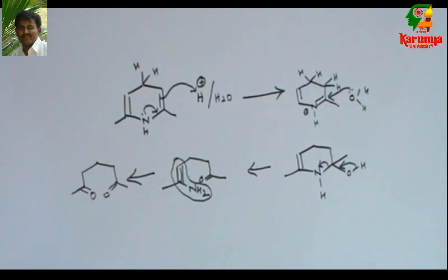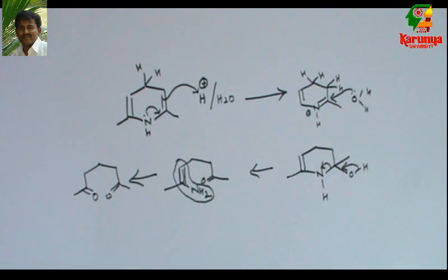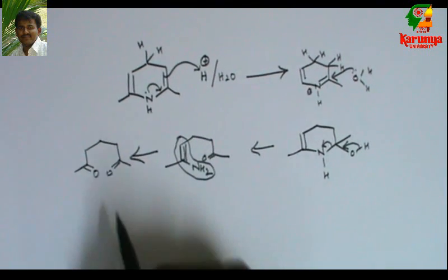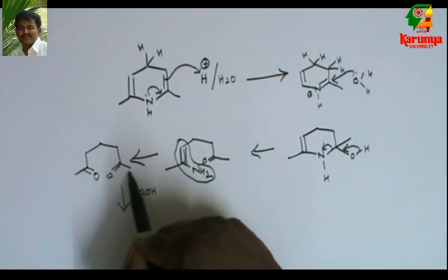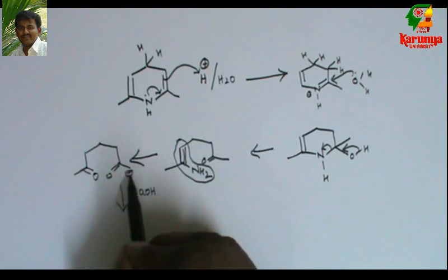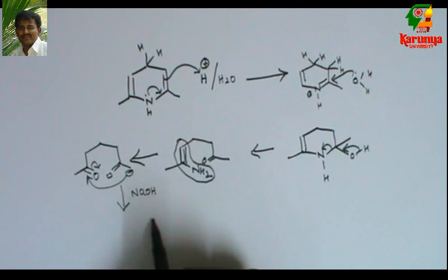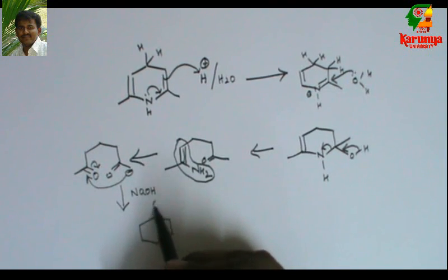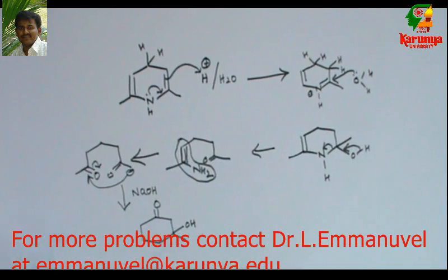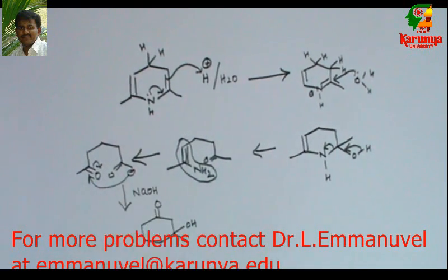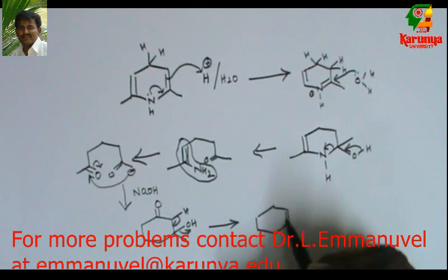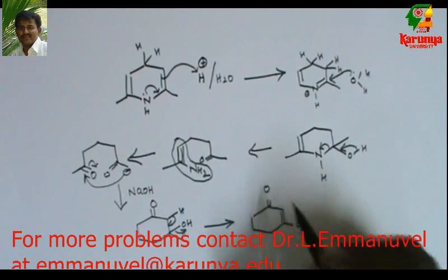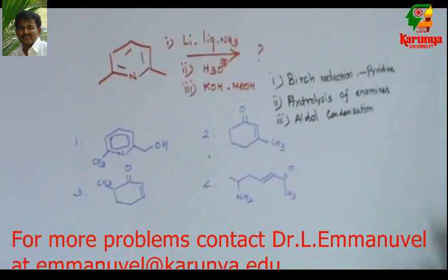A similar reaction takes place again because the other nitrogen is also an enamine. As a result, we get a 1,5-diketone. This reaction takes place when we add H⁺ and water — that is the second step. In the third step, treatment with sodium hydroxide: the base abstracts a proton and intramolecular aldol condensation occurs, giving a product that can eliminate water to give the condensation product — cyclohexenone.